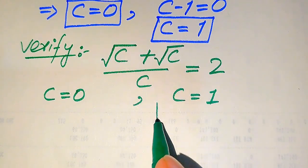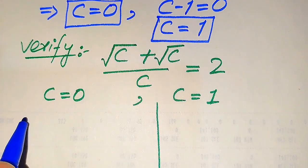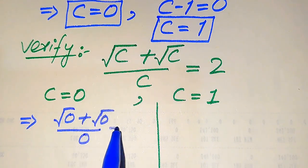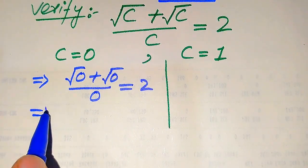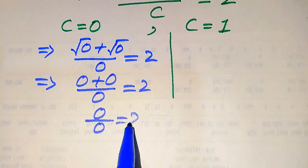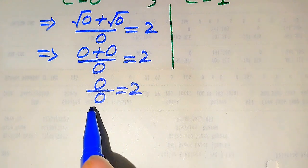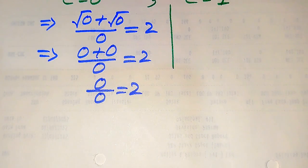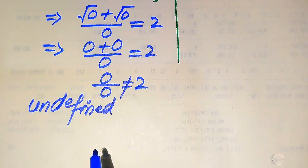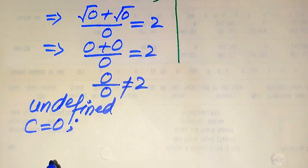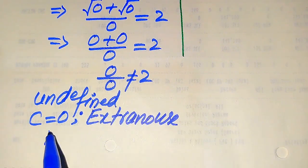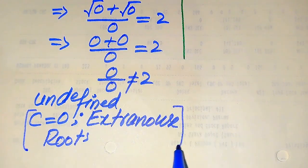First, we substitute C equals 0 into the left-hand side. It becomes: square root of 0 plus square root of 0 divided by 0 equals 2. This gives 0 plus 0 divided by 0, which is 0 over 0. This is the indeterminate form, or in other words it is undefined. Since the left-hand side is undefined, both sides are not equal, so C equals 0 does not satisfy the equation. Therefore, C equals 0 is an extraneous root.